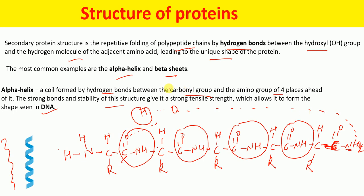The alpha helical structure is this helical-shaped structure formed by hydrogen bonds between the carboxyl group — which contains the oxygen atom — and the amino group — which contains the nitrogen atom and hydrogen atom. The interaction between this hydrogen atom and this oxygen atom results in the formation of the hydrogen bond, and this bond is responsible for the formation of alpha helix.